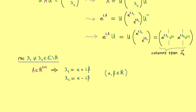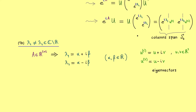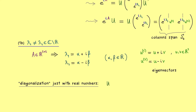A similar thing holds for the eigenvectors. We choose u1 as an eigenvector for lambda1 — it's a vector in C², and we can write it as u plus iv, where u and v are real vectors. One can check that defining u2 as u minus iv gives an eigenvector for lambda2. These eigenvectors form a basis of C² and can be used for a complex diagonalization. However, there is also a substitute that only uses real numbers — not an actual diagonalization, but good enough for our purposes.